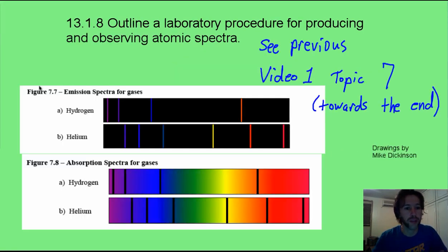Here are some atomic spectra. These guys here are emission spectra, and down below here are the missing lines, those are absorption spectra. As far as the lab procedure, we've already done that. If you look back at video one in topic seven, the standard level atomic physics, look towards the end of that video, we go through the lab procedure.